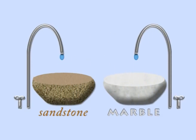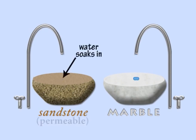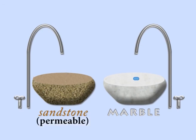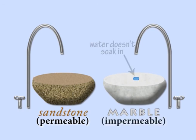Let's put some drops of water on different rocks and see what happens. The water soaks into the sandstone, so it is permeable to water. However, the water stays on the surface of the marble and doesn't soak in, so it is impermeable.